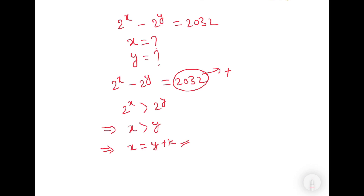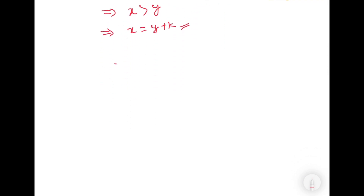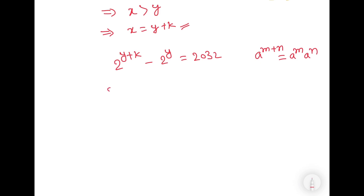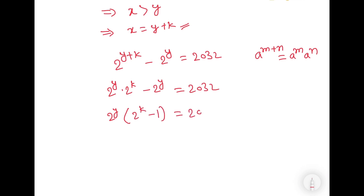Putting this value into the original equation, we will have 2 to the power y plus k minus 2 to the power y is equal to 2032. As we know that a to the power m plus n can be written as a to the power m into a to the power n, we can write 2 to the power y into 2 to the power k minus 2 to the power y is equal to 2032. Further, we can write 2 to the power y, bracket, 2 to the power k minus 1, is equal to 2032.